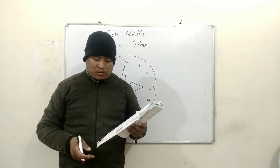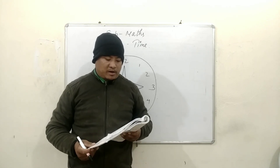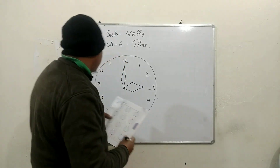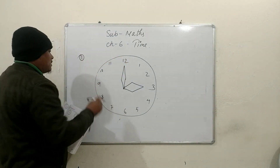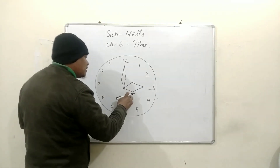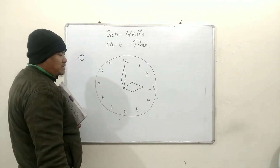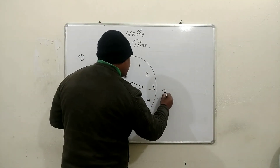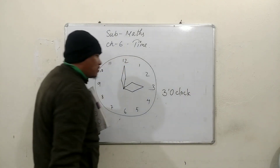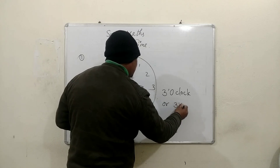Come to your book, page number 129, exercise 6A, question number 1: write down the time shown by each of the following clocks. Look — the minute hand is exactly on 12 and the hour hand is exactly on 3. So the time is 3 o'clock. We can also write it in this form.